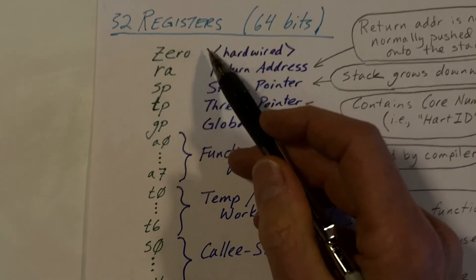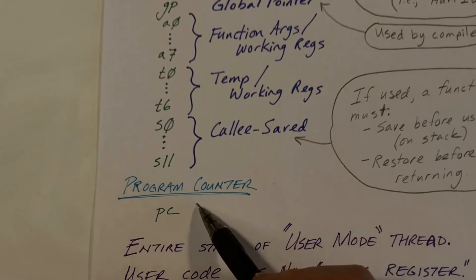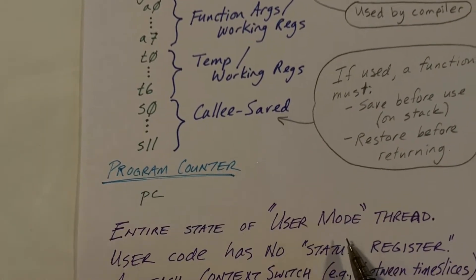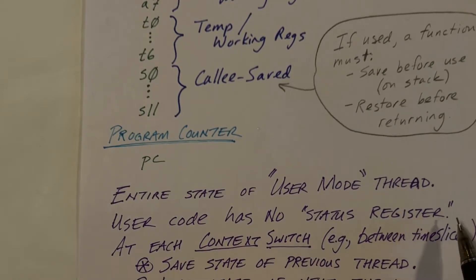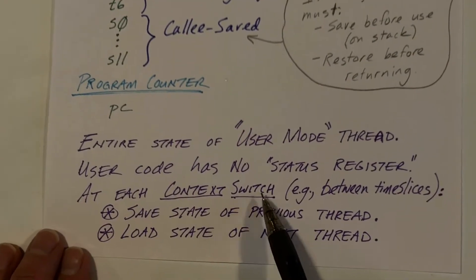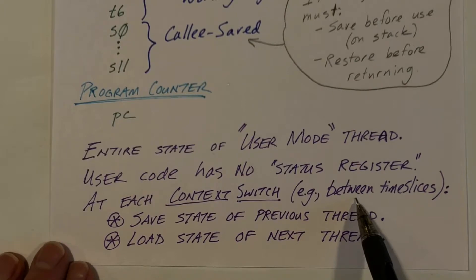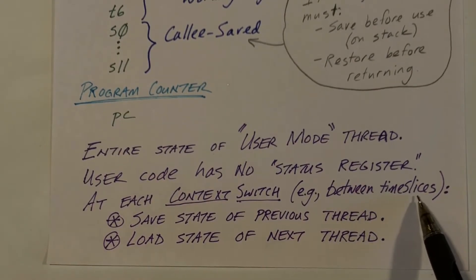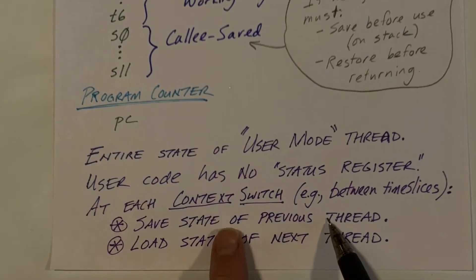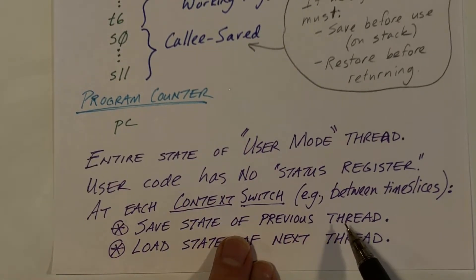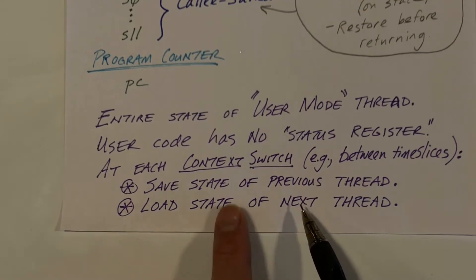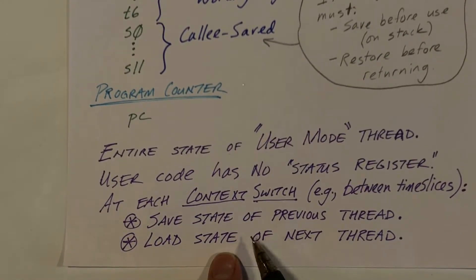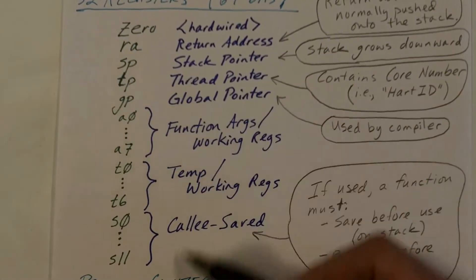So this is the entire state: these 31 registers and the program counter. It's the entire state of a user-mode thread. User code has no access to the status register, so the status register is invisible in user-mode code. At each context switch — when we are ending one process's time slice and about to begin another's — the kernel will save the previous process's registers and then load the registers that constitute the state of the next process.